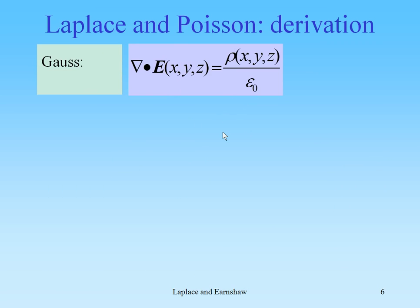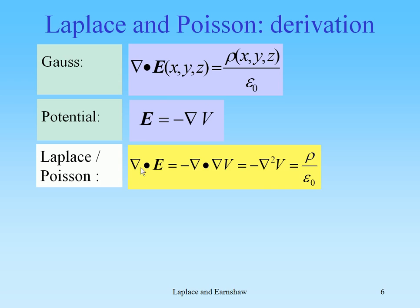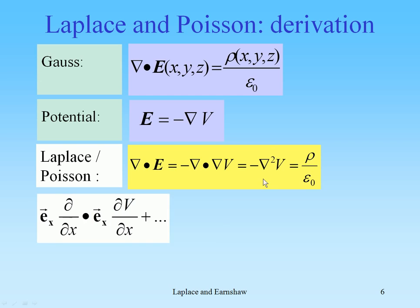Now the derivation of Laplace and Poisson. We start with Gauss in differential form and the potential in differential form, then combine them. The divergence of E can be written as minus the divergence of the gradient of V — the combination of the two — which equals minus the Laplace operator times V. That should be equal to rho over epsilon naught. What is the Laplace operator?